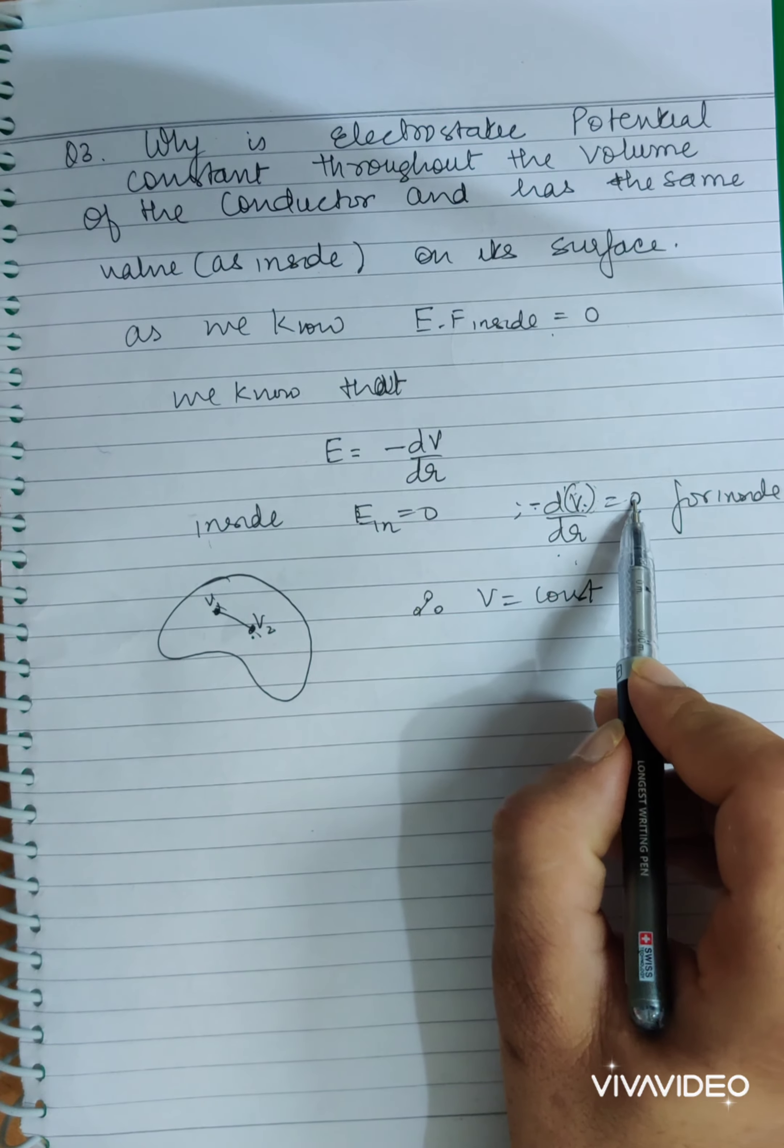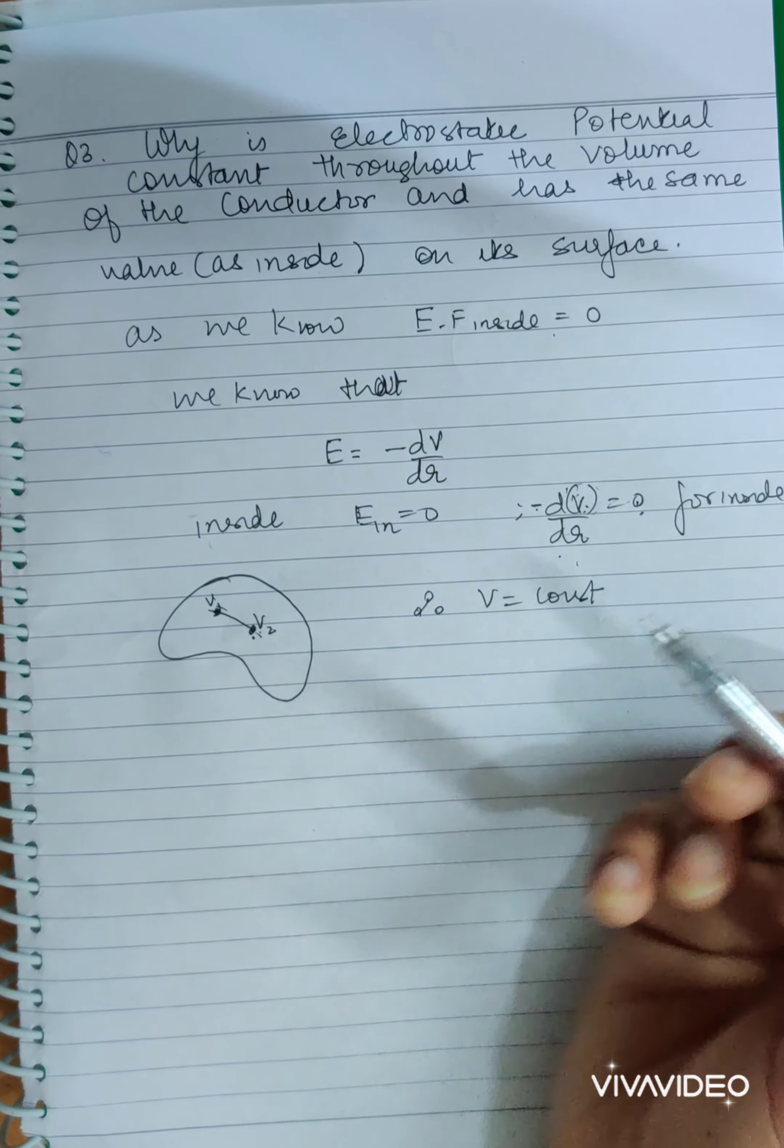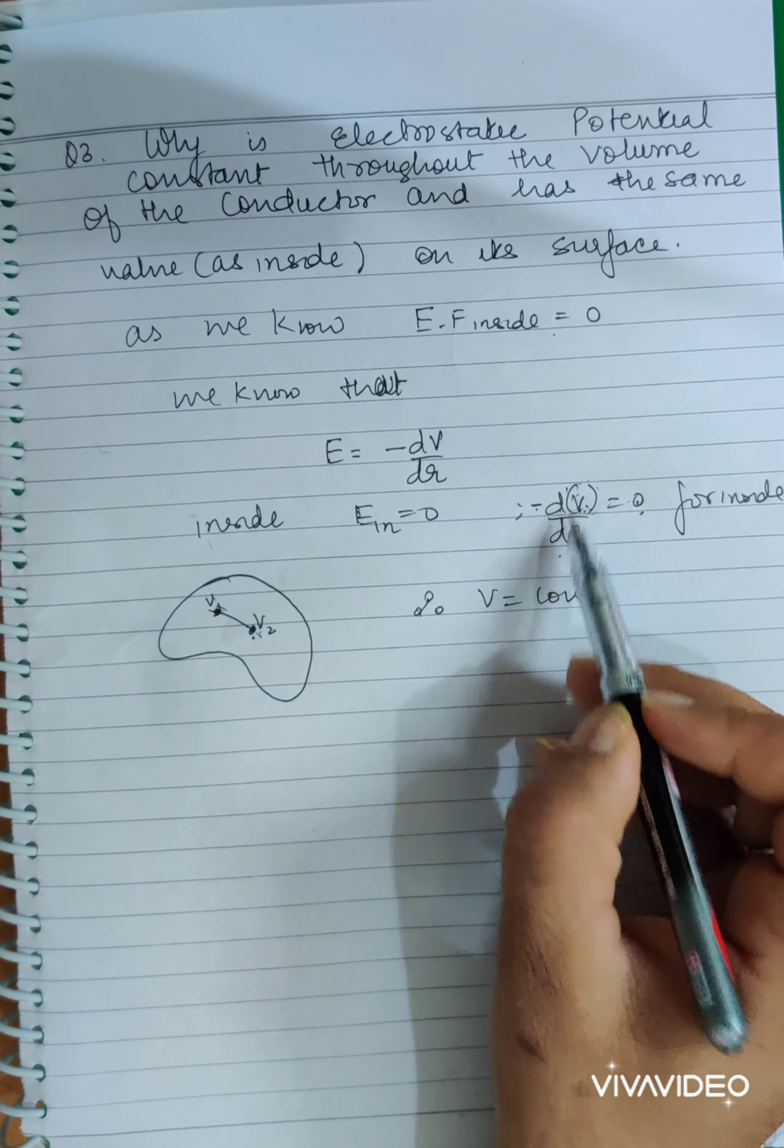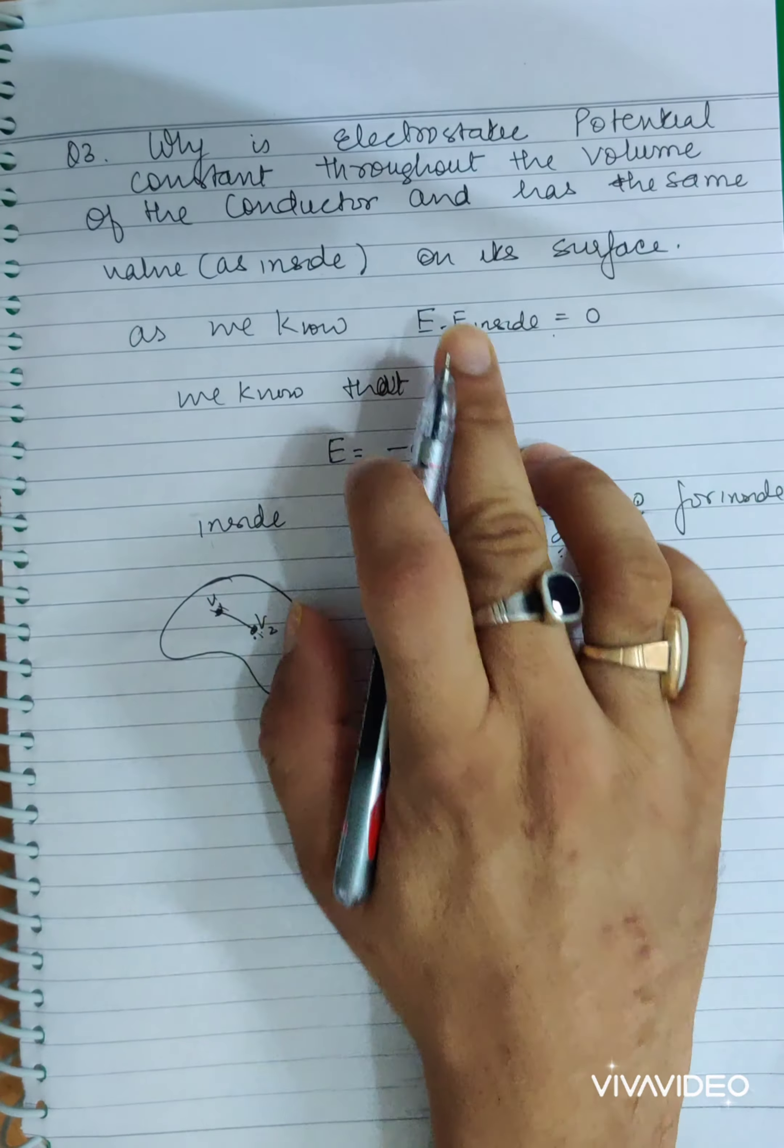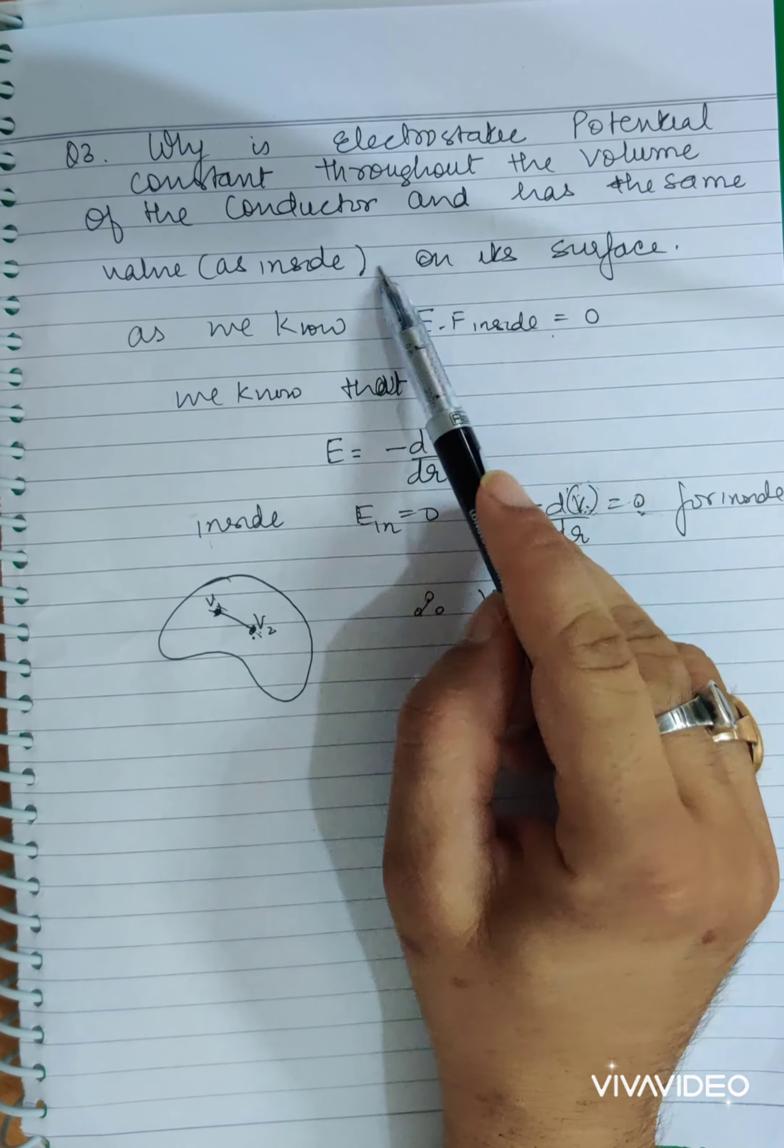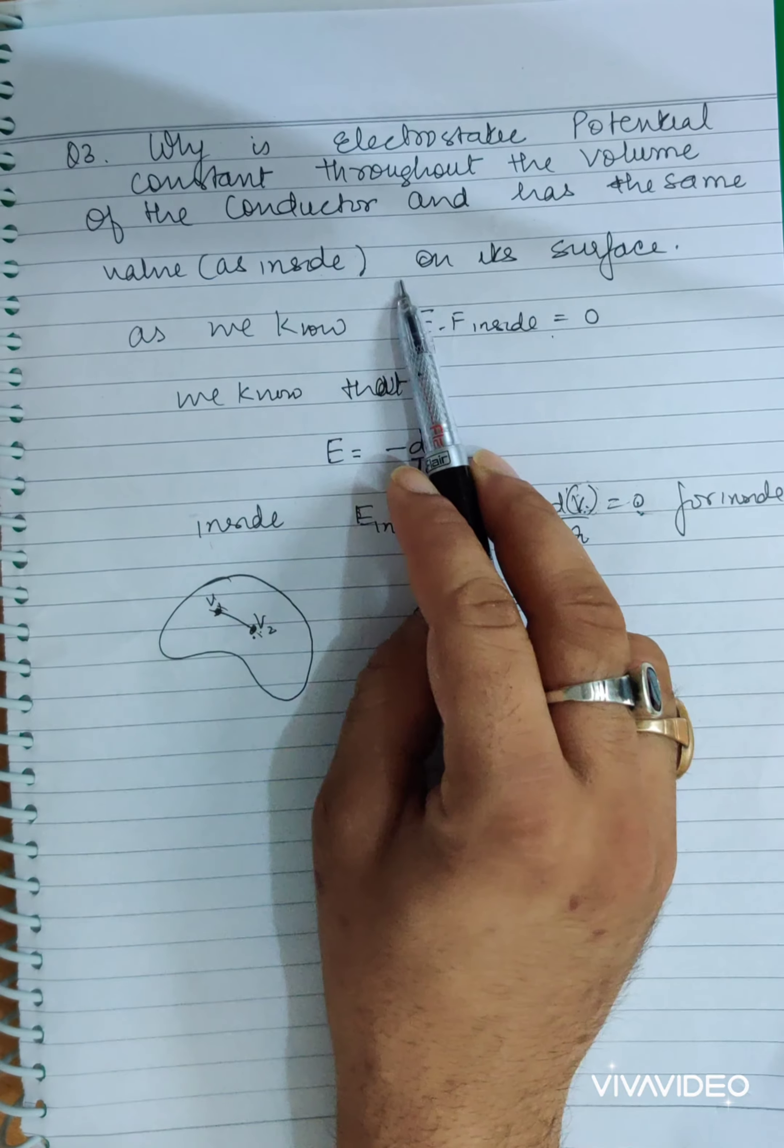Here dr is the distance between the two points. So that distance is changing but there is no change in the potential, hence dV by dr is zero. Now we are trying to prove constant potential on its surface, that this is the same value as inside.